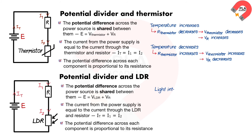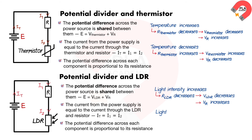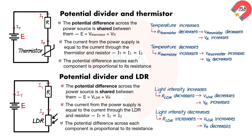When the light intensity increases, the resistance of the LDR decreases. The LDR will get a smaller share of the potential difference, whilst the other resistor will get a greater share. When the light intensity decreases, the resistance of the LDR increases. The LDR will get a greater share of the potential difference, whilst the other resistor will get a smaller share.